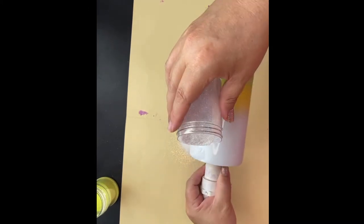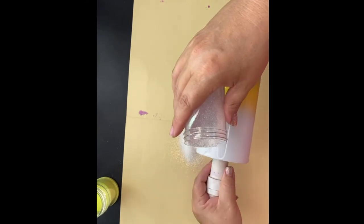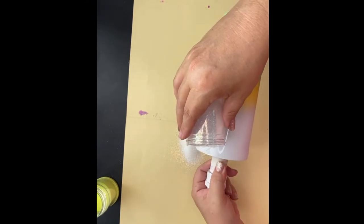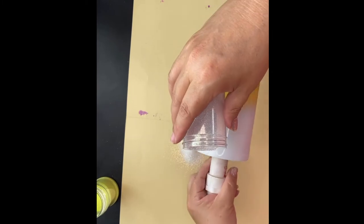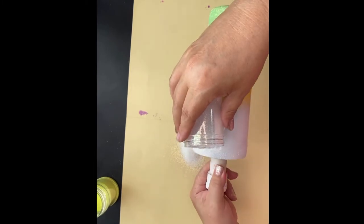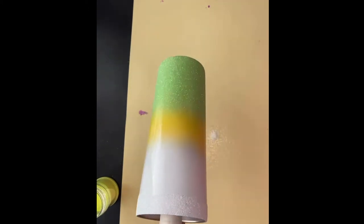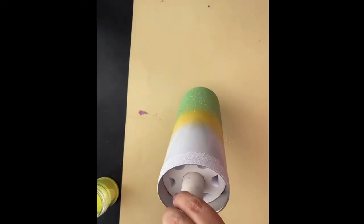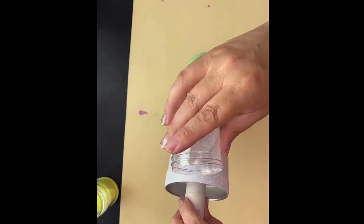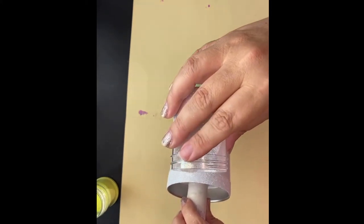I'm going to just go all the way around the cup slowly working. And again, if you like to work on a turner you certainly could do this. Working on a turner you would just be, instead of tilting your cup, you would be holding your glitter shaker higher to get that ombre down into the other colors.